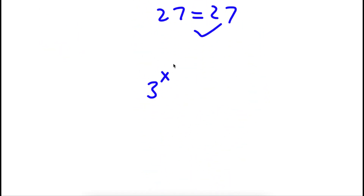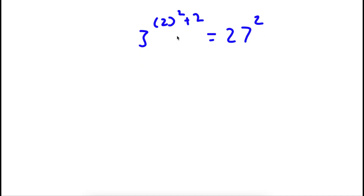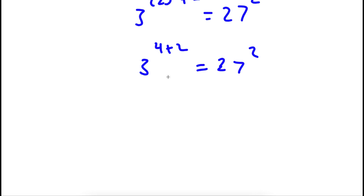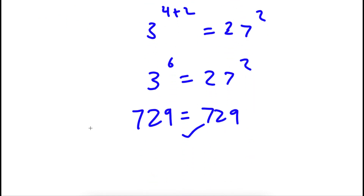Now let's try x equals 2. I have 3 to the power of 2 squared plus 2 is equal to 27 to the power of 2. 2 squared is 4, so 3 to the power of 4 plus 2 equals 27 to the power of 2. 4 plus 2 is 6, so 3 to the power of 6 equals 27 to the power of 2. 27 squared equals 729, and 3 to the power of 6 is also 729, so x equals 2 is also a solution.